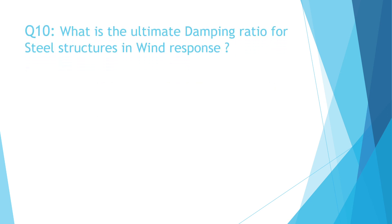Question number ten. What is the ultimate damping ratio for steel structures in wind response? A: 1.5%, B: 3%, C: 4%, D: 5%. The correct answer is A: 1.5%.